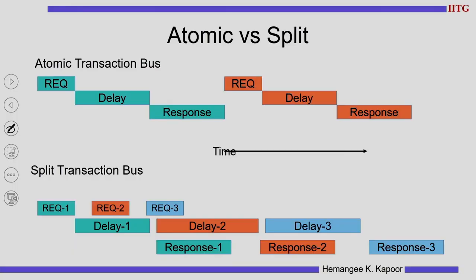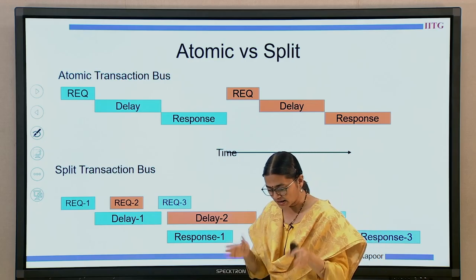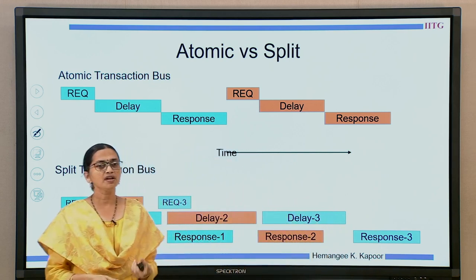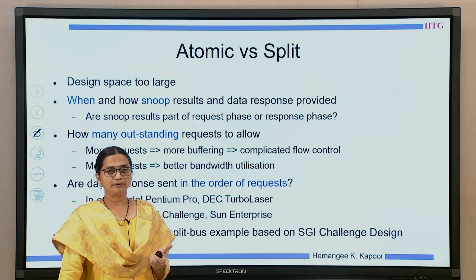Overall, this is the picture: atomic versus split. The top one shows an atomic bus where the green transaction begins and finishes before the orange transaction can start. Whereas in a split transaction bus, you can see that multiple transactions happen in parallel.